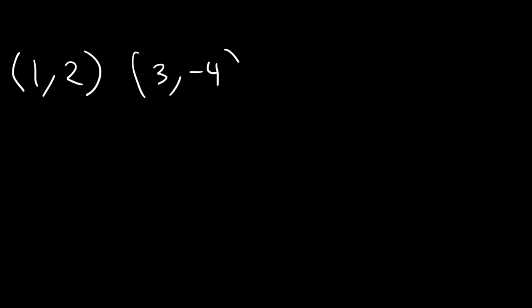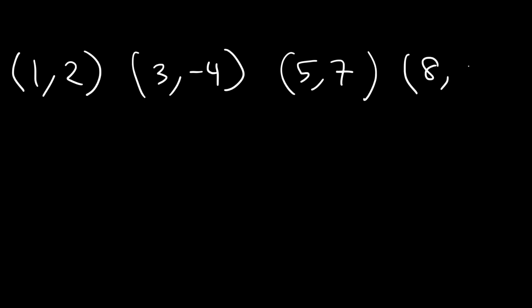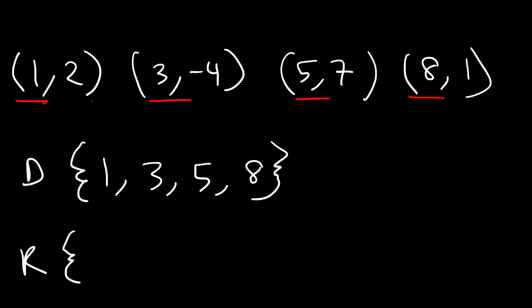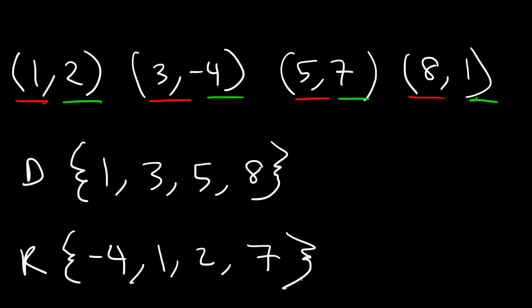Sometimes you may need to determine the domain and range of a function. Given a set of ordered pairs, the domain is all of the x values — for example, 1, 3, 5, and 8. The range is the set of all y values — negative 4, 2, 7, and 1. Written in ascending order, the range is: negative 4, 1, 2, and 7. The domain represents all x values and the range represents all y values.